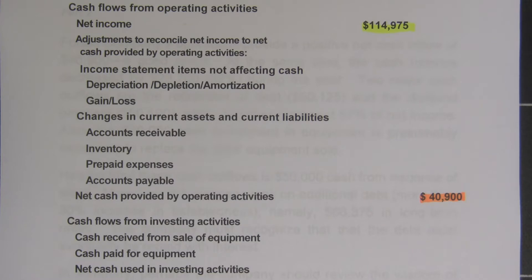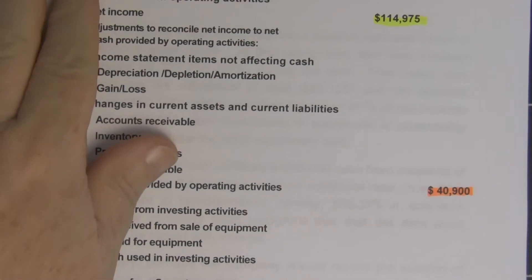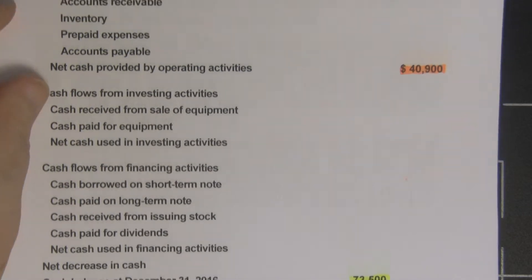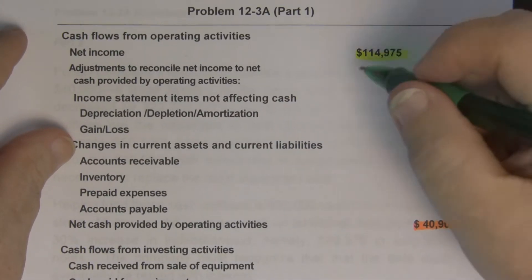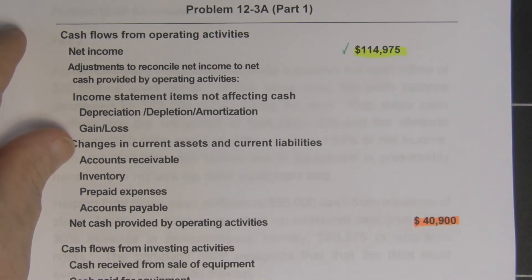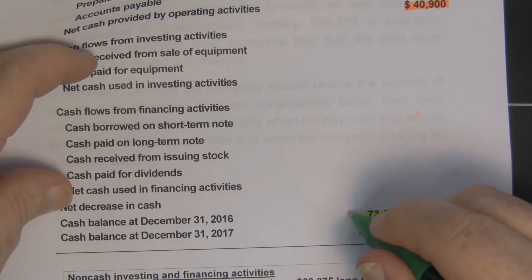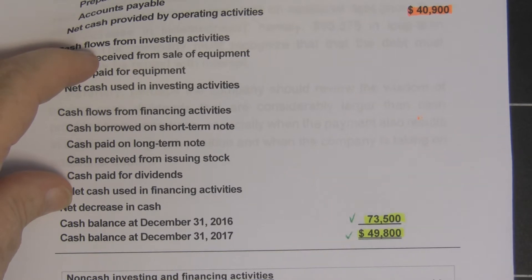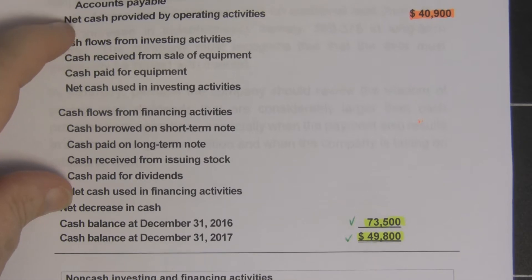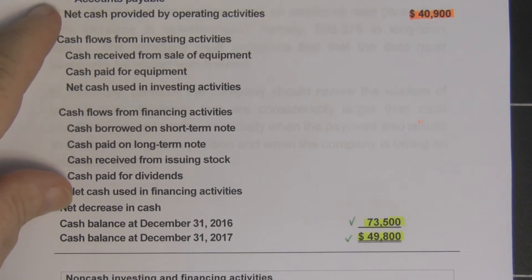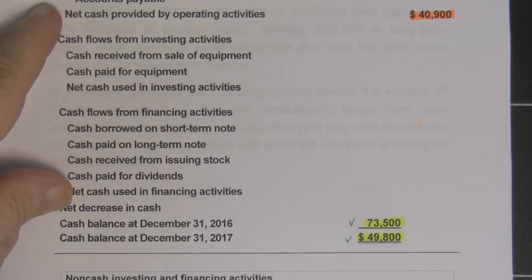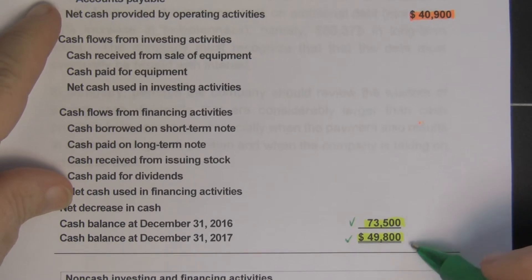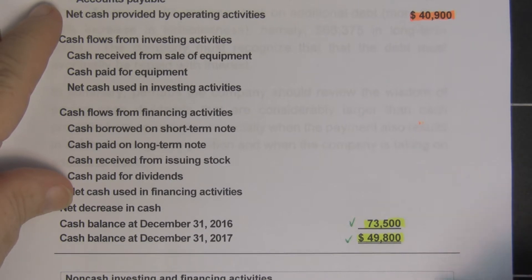It's not the end. The orange number is the check number they give you from the textbook, and there are three numbers highlighted in yellow that you have to begin with. This came from the income statement. This came from the balance sheet at the end of last year, and this from the balance sheet at the end of this year. So you know at the beginning how much money you're looking for — the net decrease in cash — about twenty-three thousand dollars.